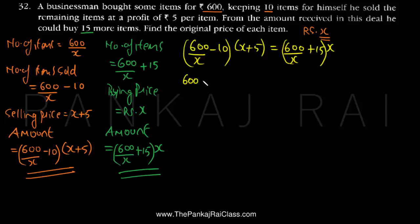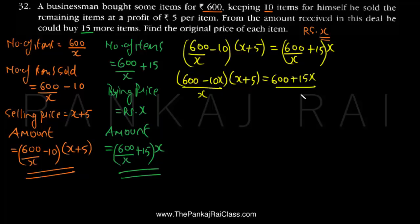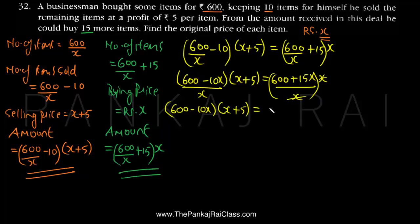Cross-multiplying by X, we get (600 - 10X) multiplied by (X + 5), divided by X, equal to (600 + 15X) divided by X, and the X terms cancel. So on the left we have (600 - 10X)(X + 5) equal to (600 + 15X) times X. Opening the bracket on the left: 600X + 3000 - 10X² - 50X.